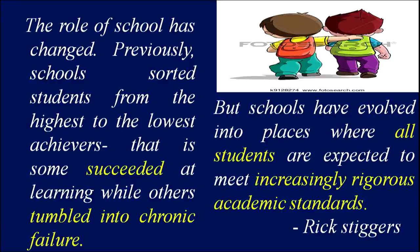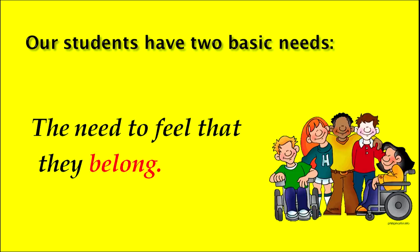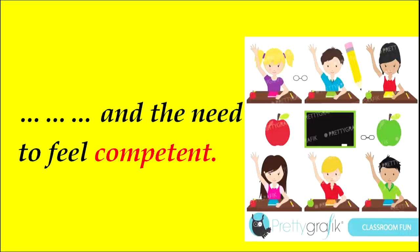Previously, schools sorted students from the highest to the lowest achievers — that is, some succeeded at learning while others tumbled into chronic failure. But schools have evolved into places where all students are expected to meet increasingly rigorous academic standards. Basically, our students have two basic needs: first, the need to feel that they belong and are connected to each other, and second, the need to feel competent — having self-confidence and knowledge of their caliber and how to use it.